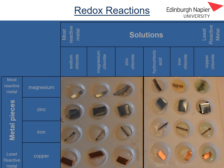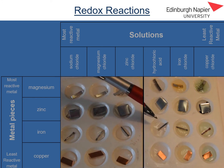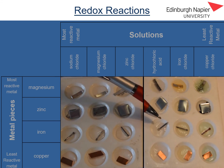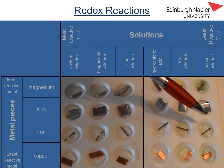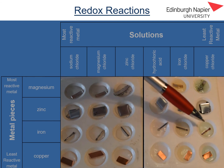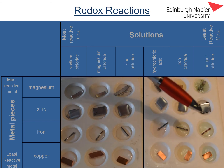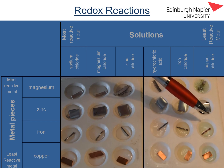Looking at iron now, there is no evidence of a chemical reaction having taken place with sodium chloride solution, magnesium chloride solution, zinc chloride solution, hydrochloric acid solution, or iron chloride solution. However, we can see quite clearly that there is a reaction taking place between the iron and the copper chloride solution — copper metal has formed on the outside of the piece of iron.